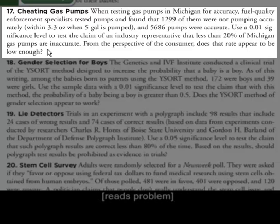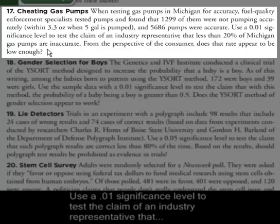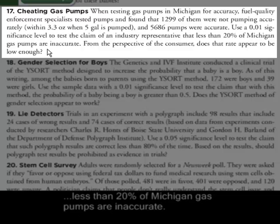When testing gas pumps in Michigan for accuracy, fuel quality enforcement specialists tested pumps and found that 1,299 of them were not pumping accurately, and 5,686 were accurate. Use a .01 significance level to test the claim of an industry representative that less than 20% of the Michigan gas pumps are inaccurate.